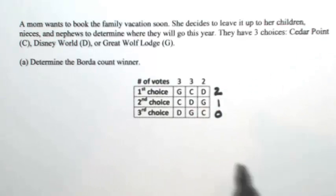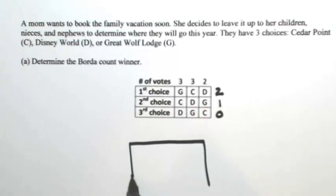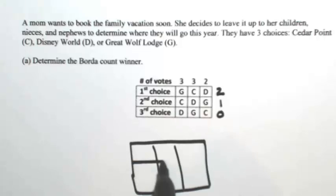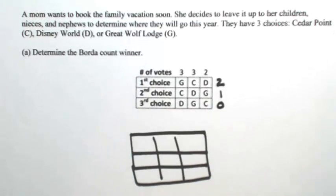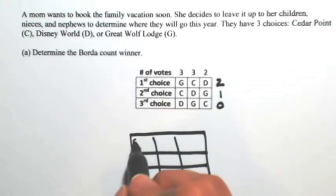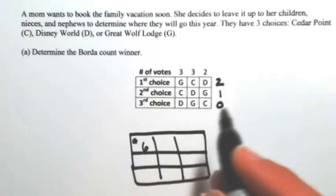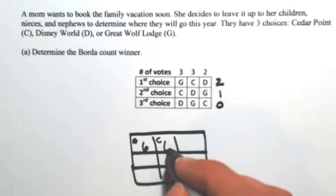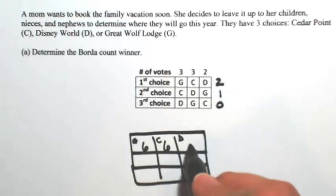I'm going to recreate this table, and within each cell I'm going to write down how many total points each letter is going to get. In that first cell with G, three votes worth two, so that's six. C gets three votes worth two, so that's six. D gets two worth two, so four.